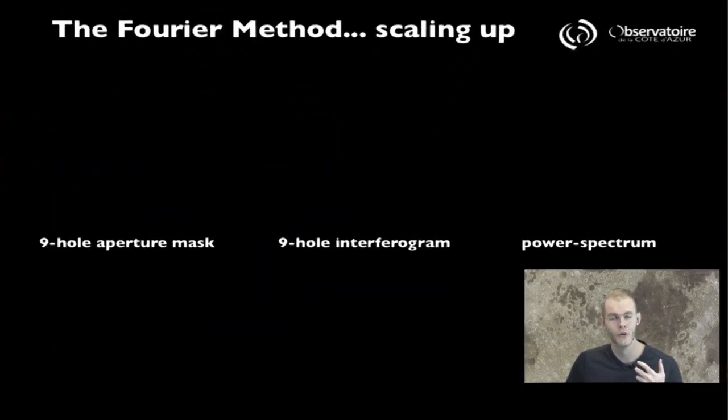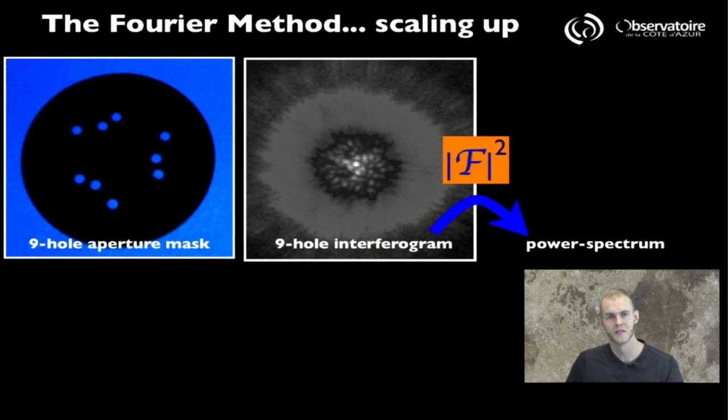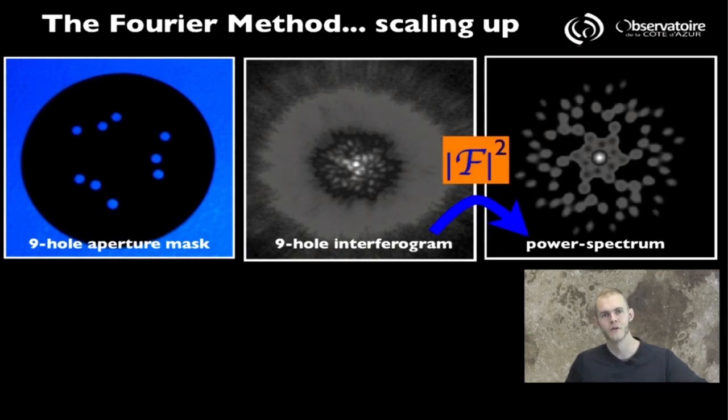And just to show you how this method can actually extend to more and more complex cases, let me show you what an actual dataset looks like for what is called a 9-hole non-redundant aperture mask, something that is used to turn an actually fully functional imaging telescope into a 9-aperture interferometer.